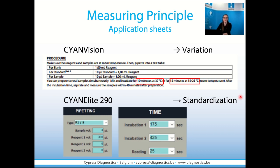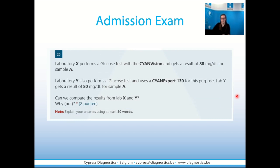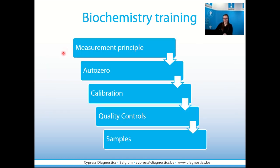In one of the questions on the admission exam, we have asked what is the impact of using our Cyan Vision without an incubator. We also ask, in another example, when two labs perform the same glucose analysis — one with a Vision and one with an automate — can we compare the results, and why or why not? So now we have seen everything about the measurement principle and the three different types of biochemical reactions. Let's see the daily routine.